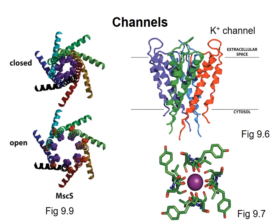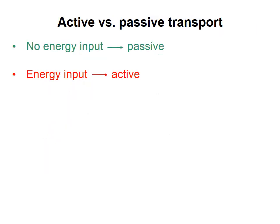Both transporters and channels are said to perform facilitated transport. Unfacilitated transport, or passive diffusion, occurs when a molecule crosses a membrane on its own, without a protein being involved. Relatively hydrophobic molecules, such as steroid hormones, can diffuse across a membrane without needing a protein. You should also distinguish between active transport, which requires an energy source to occur, and passive transport, which requires no energy input.